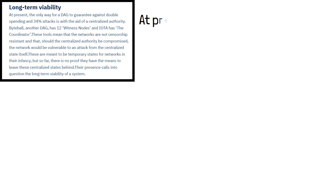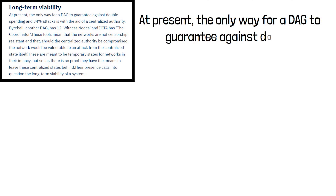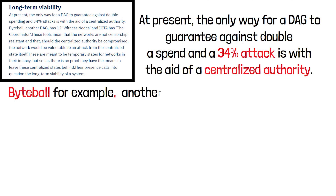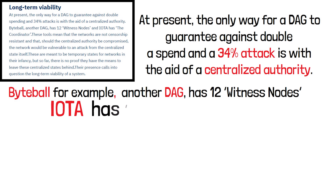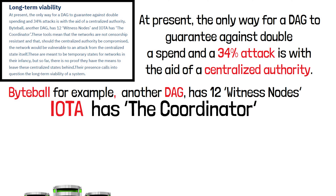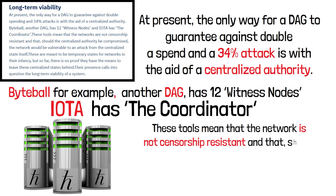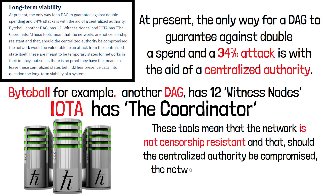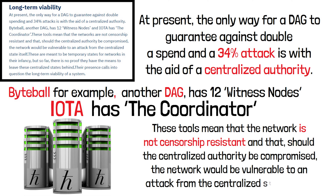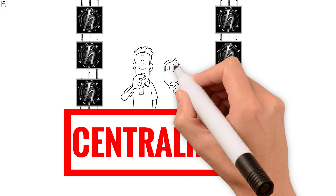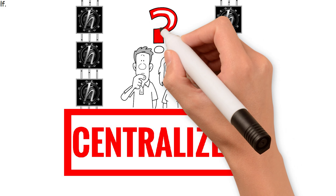Now let's talk about the long-term viability. At present, the only way for a DAG to guarantee against a double spend and a 34% attack is with the aid of a centralized authority. Byteball, for example, another DAG, has 12 witness nodes. IOTA has the coordinator. These are centralized validators that dictate how the network runs. These type of tools mean that the network is not censorship resistant. And should any centralized authority be compromised, the network would be vulnerable to attacks from a centralized state itself. These quote-unquote centralized states are meant to be temporary states for the network in its infancy, but so far there is no proof that they have any means of leaving these centralized states behind. Their presence alone calls into question the long-term viability of the system.